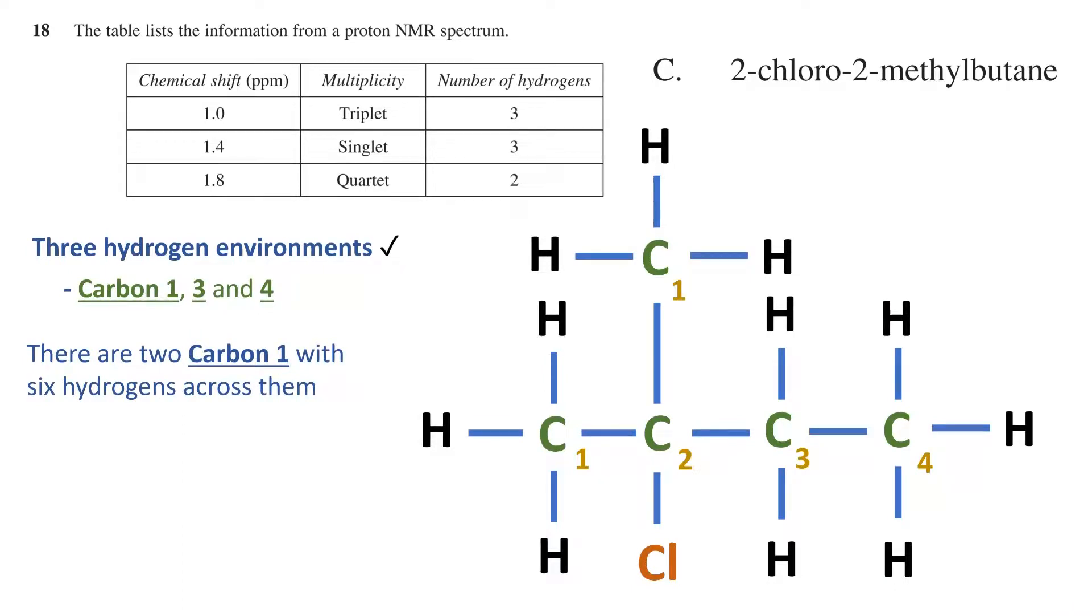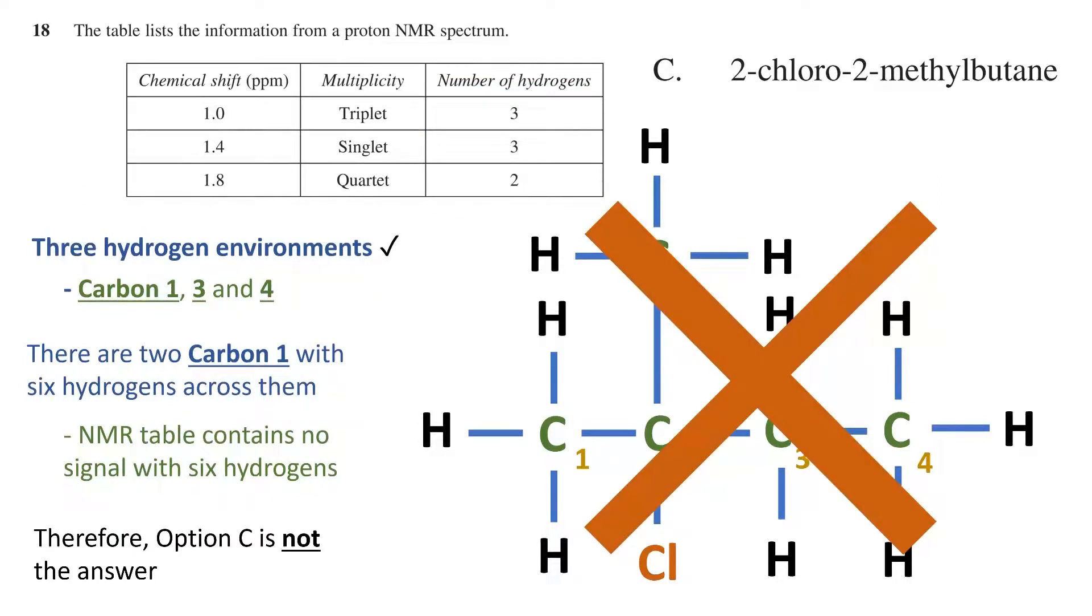the hydrogens off of the two carbon ones share identical environments, and there are six of them. We see in the table that there is no signal that has six hydrogens associated with it. Therefore, option C is not the answer either.